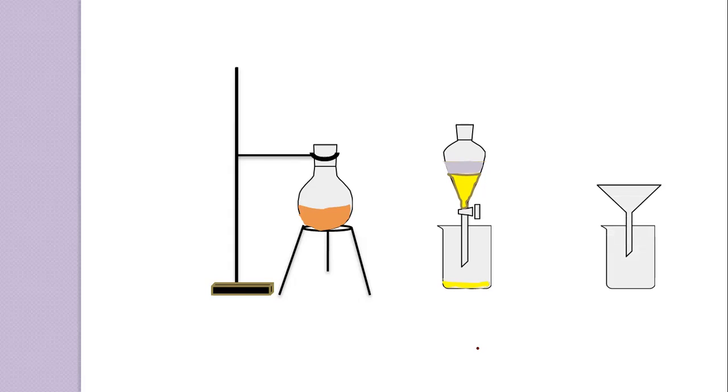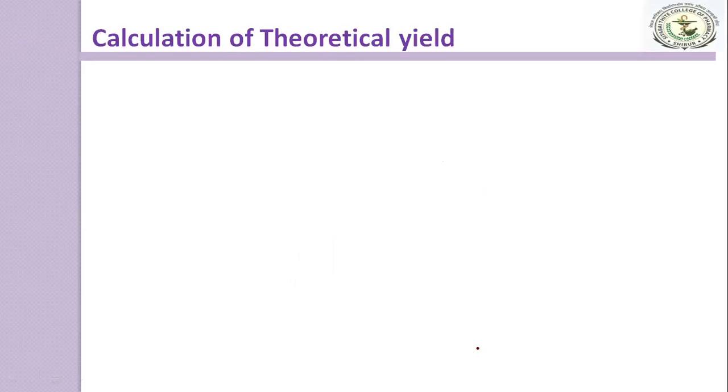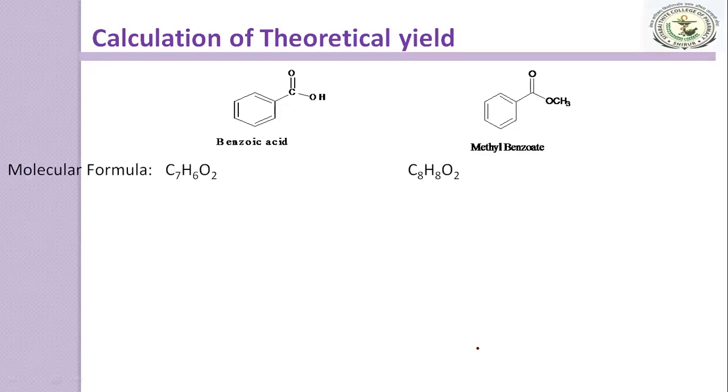Next is the calculation part, calculation of theoretical yield. You have to calculate the molecular weight by considering the molecular formula of benzoic acid which is the starting reagent and methyl benzoate which is the product. Here is the molecular formula of these two with molecular weight.